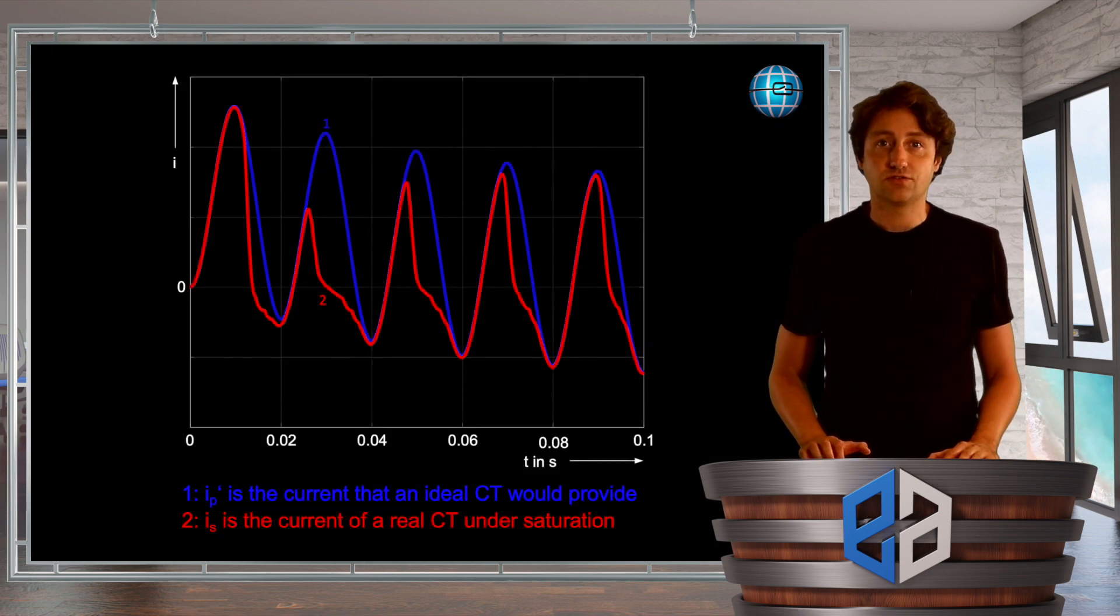During the lifetime of a current transformer, many faults have to be cleared in the system and each of the faults may add some remnant flux to the core due to the DC component of the fault. And likewise, DC measurements performed on the current transformers may add some remnants as well.